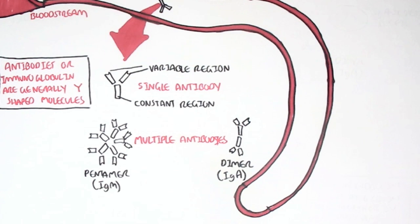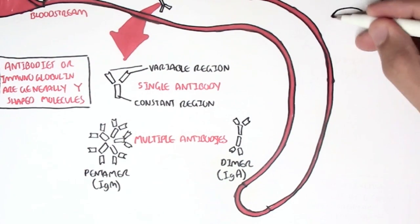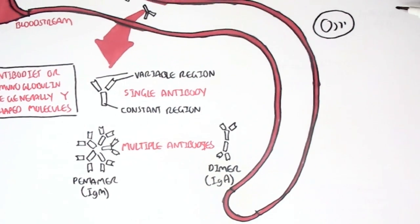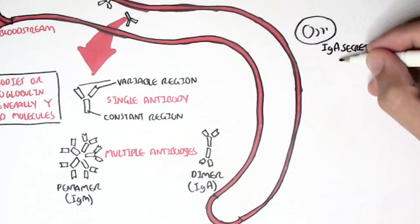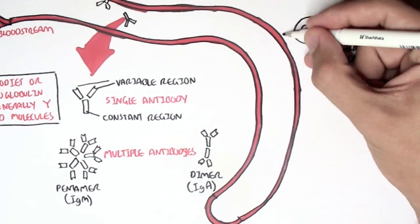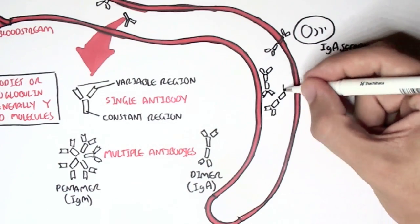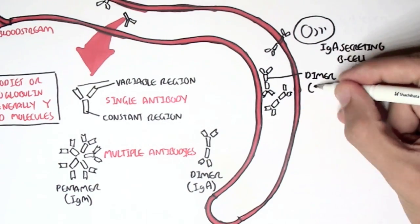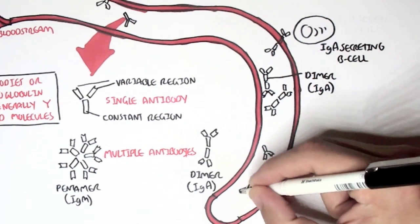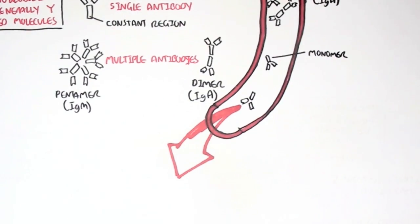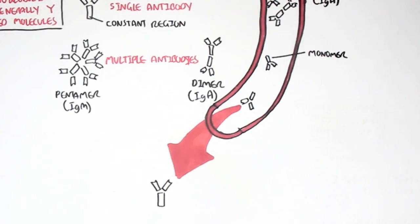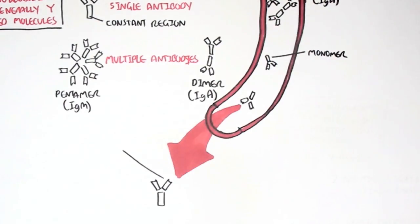Going back to the bloodstream, we can have IgA-secreting B cells, or plasma cells, and they will essentially secrete IgA in a dimeric form. So this is a dimeric IgA. Of course, there are other antibodies that are only a monomer — only a single antibody. Let's zoom in on this monomer and learn a bit more about the shape.